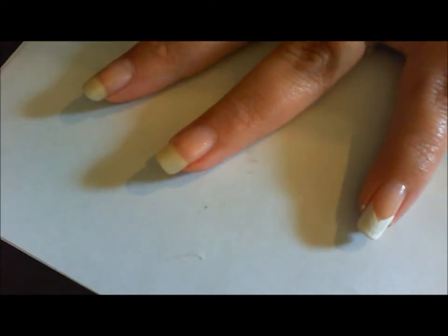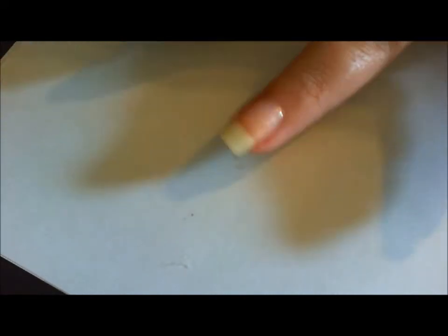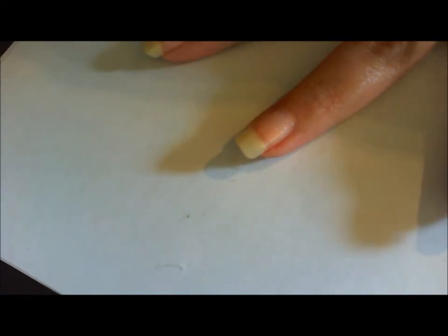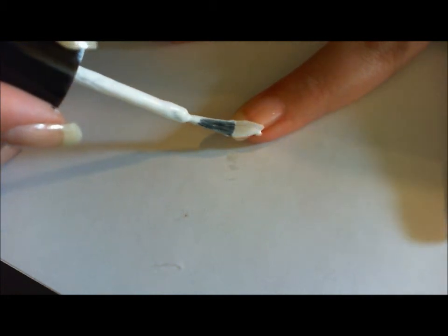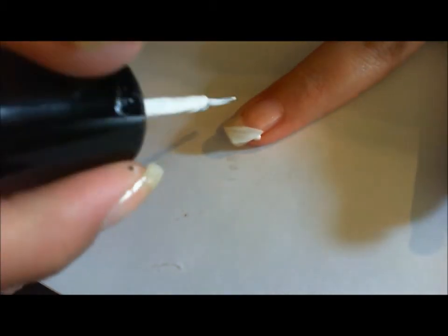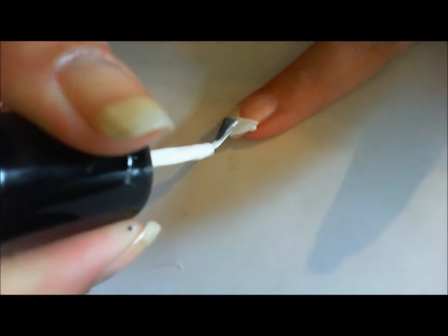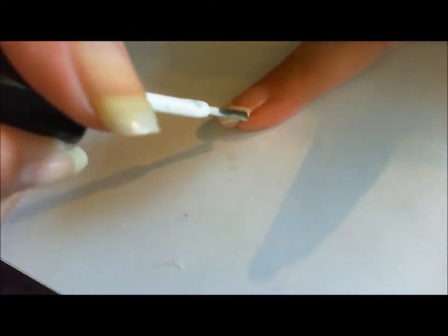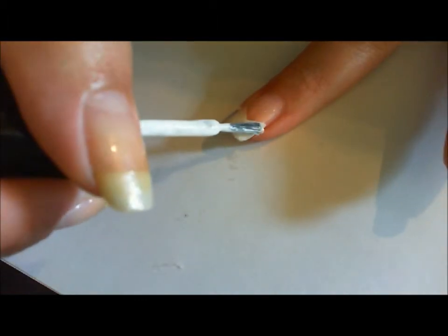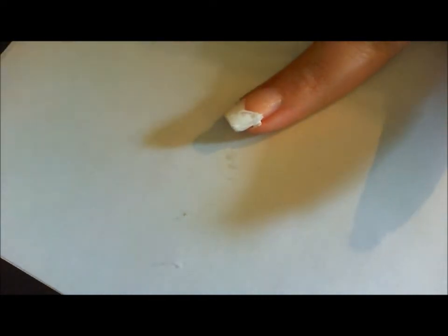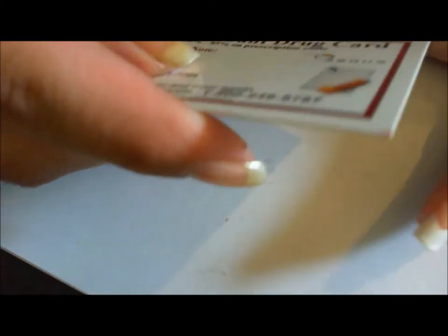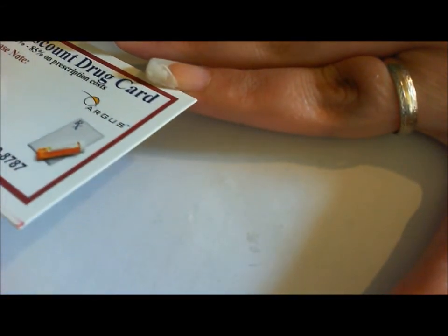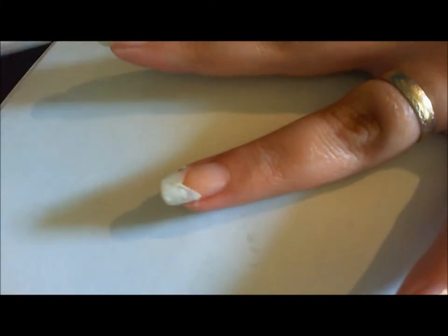And then we're just going to fill it in. Okay, doesn't have to be super perfect because we're going over it with other colors. But again, you're going to start over here and go up, and then you're going to go over here and go up, and then just fill it in. Doesn't have to be super perfect. It can be streaky. And when you get some pooling over here, I take just a business card, push it in and slide it, and it kind of takes care of that.